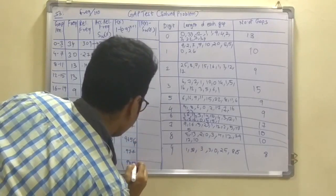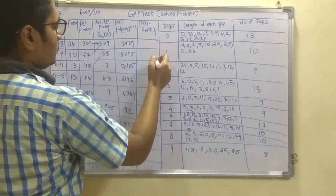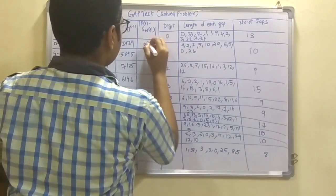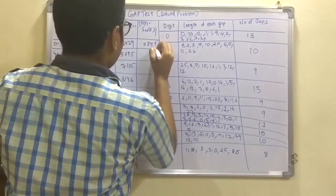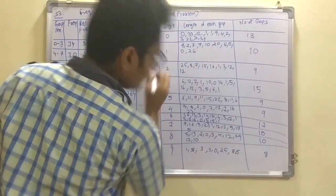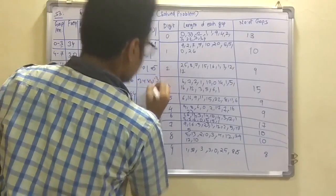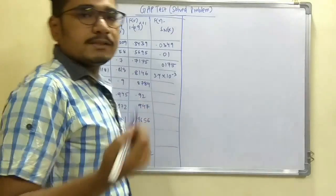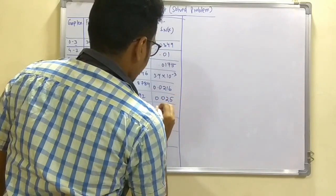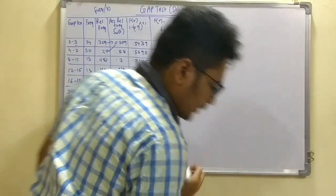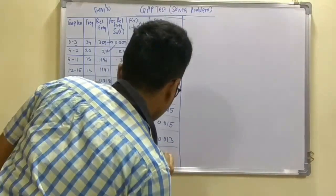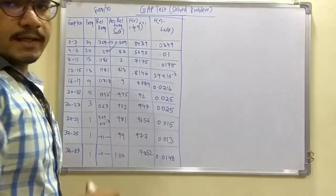Continuing the F(x) values: 0.977 and 0.9852. Then computing |F(x) − Sn(x)| for each row gives: 0.0349, 0.01, 0.0175, 0.0175, 3.4×10⁻³, 0, 0.0216, 0.025, 0.025, 0.015, 0.015, 0.013, and 0.0148.